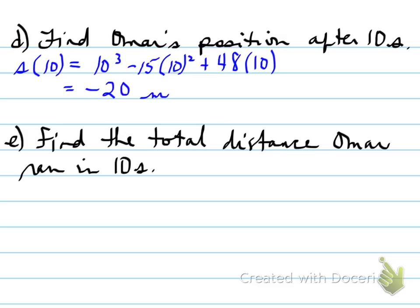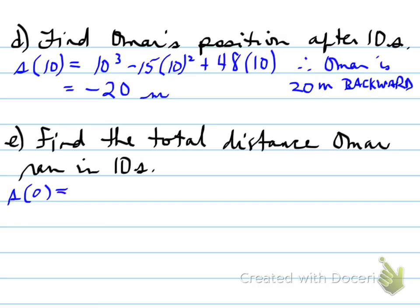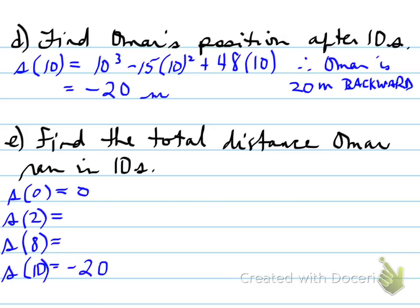To find the total distance Omar ran, you need to find the different distances he ran in different directions. You need to find S at 0, S at 2, S at 8, and S at 10. He starts at a certain position at time 0, then moves in one direction up to 2 seconds, then the other direction up to 8 seconds, and back the other direction after 10 seconds.